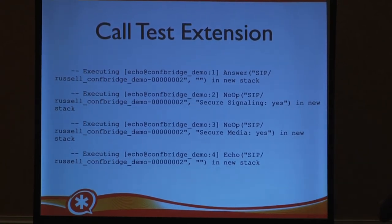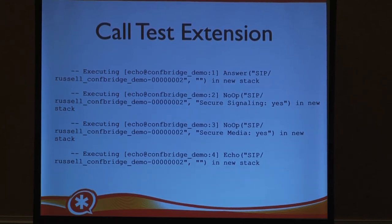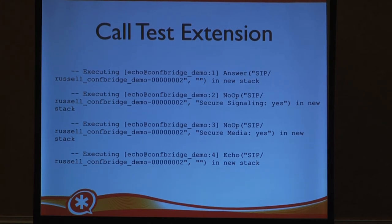After reloading the routing configuration and making a call to Asterisk, you can see the verbose output on the console showing the call hitting the dial plan. It's answering, and the logic determined that secure signaling evaluated to yes, secure media evaluated to yes, and then it echoes. So you can talk to yourself — but it's always a good first test to do an echo test. So we've got Asterisk installed, we've got a client installed that can successfully make encrypted phone calls to Asterisk.